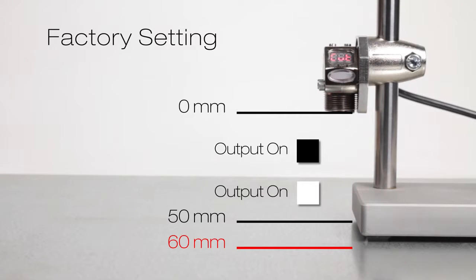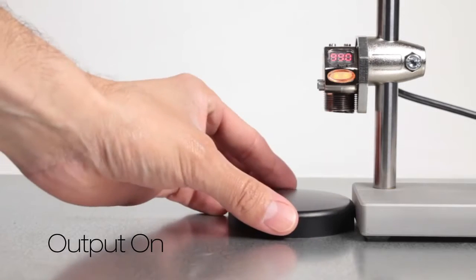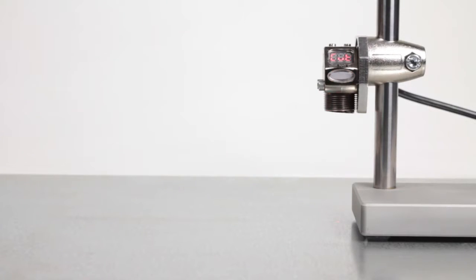Out of the box, the Q3X works like a fixed field sensor and reliably sees targets within its 0-50mm sensing range.